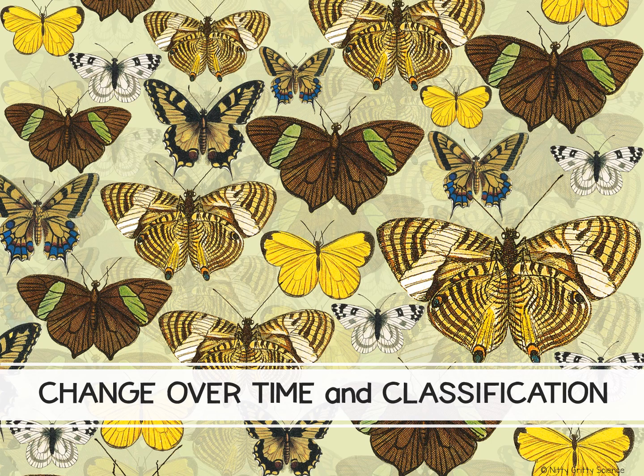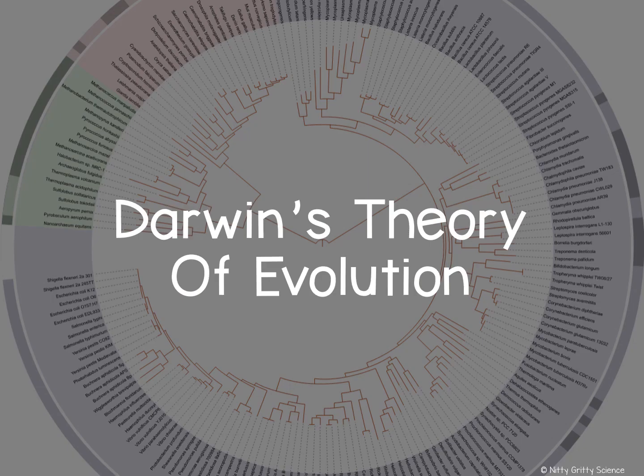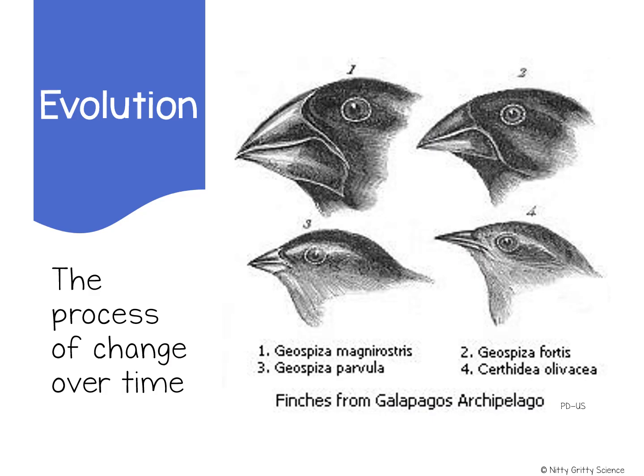Change over time and classification. Darwin's theory of evolution. In 1859, a man by the name of Charles Darwin published a book named The Origin of Species. Before he published this book, two ideas about life on Earth prevailed.